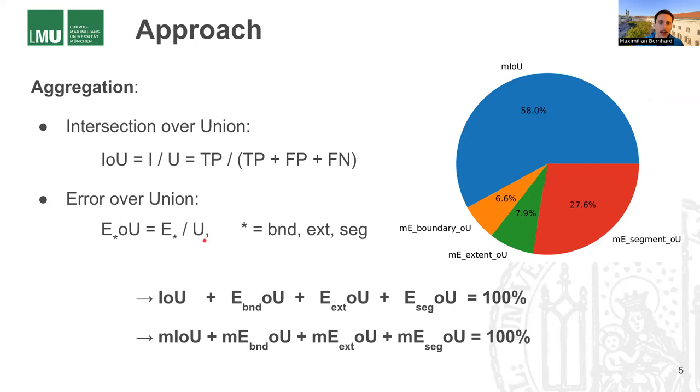And in doing so, we get the nice property that the IoU plus the errors over union for categories sum up to 100%. This still holds if we consider the mean IoU and the mean error over union. So that is a very nice property, and this makes our metrics fit perfectly with the intersection over union. So we are not trying to replace that, we want to extend it. And we can interpret the error over union as the loss in intersection over union that is caused by a certain error type.